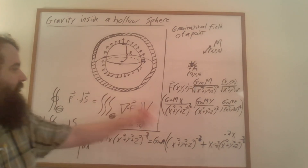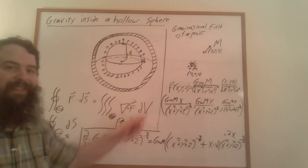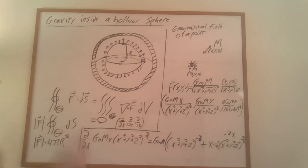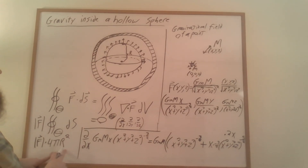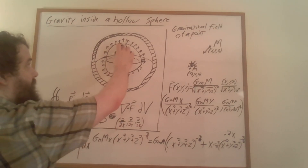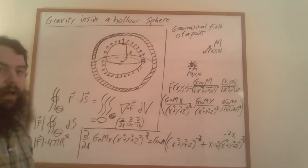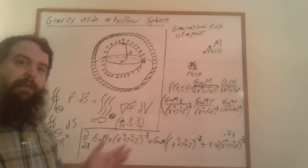That means the divergence integral is adding up a bunch of zeros, so this integral is zero. That tells us that the magnitude of F times 4πr² is equal to zero. Unless r equals zero - but there's no gravity at the center either. The only way for that to happen is if the magnitude of F is equal to zero. So there's no gravity at this point, or at any point within a hollow sphere. Thanks for watching - let me know if you have any questions or comments below, and be kind to each other.